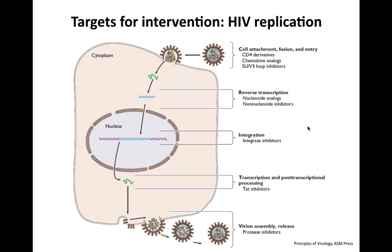Let's turn to HIV and how antivirals work against that virus. There are many targets in the replication cycle: inhibitors of cell attachment, fusion, and entry; inhibitors of reverse transcription — since reverse transcriptase doesn't exist in the cell, it's a unique target; inhibitors of integrase, which integrates viral DNA into the cellular genome; experimental inhibitors of transcription and post-transcriptional processing; and inhibitors of proteases required for virus maturation.